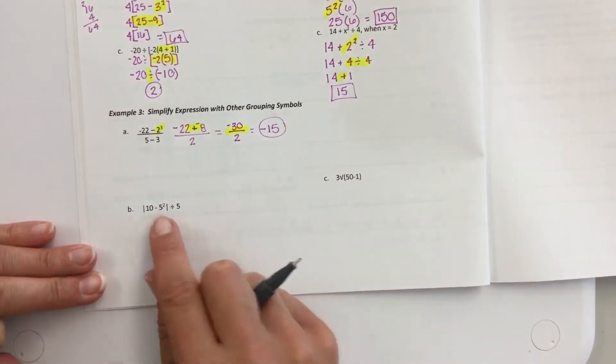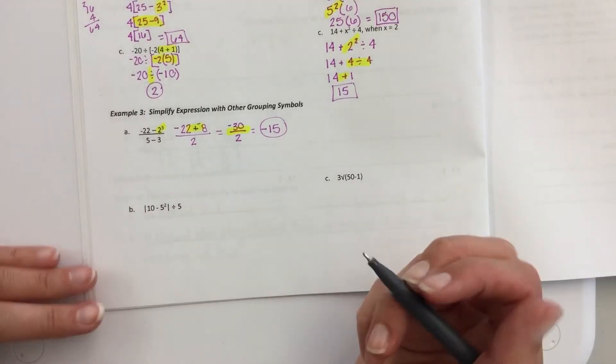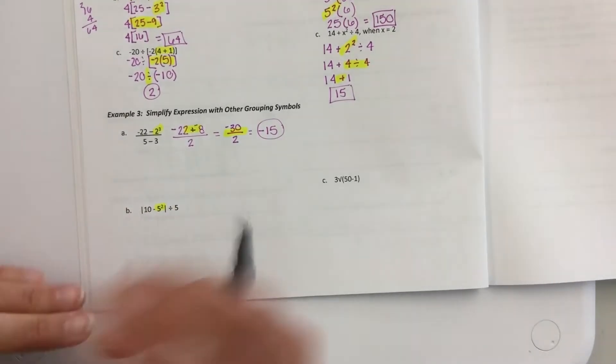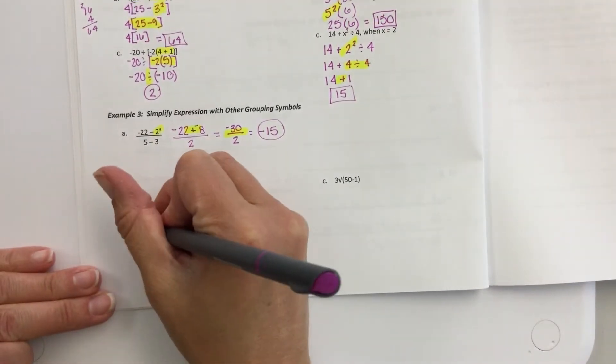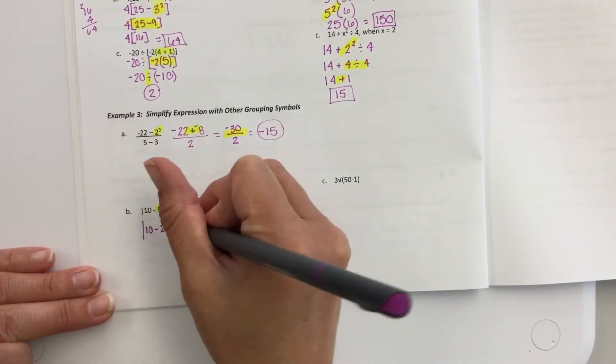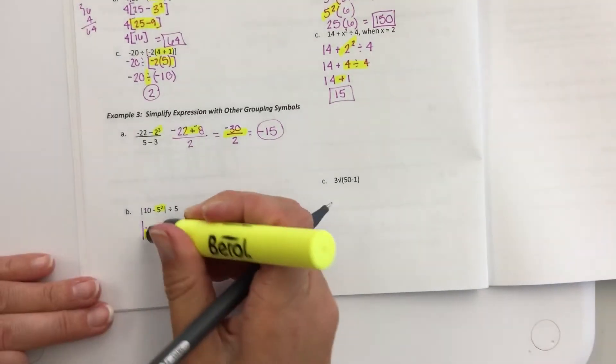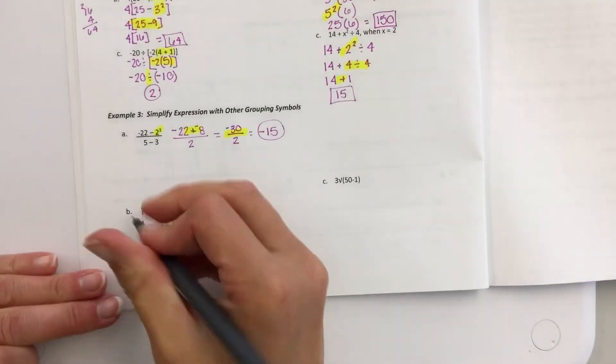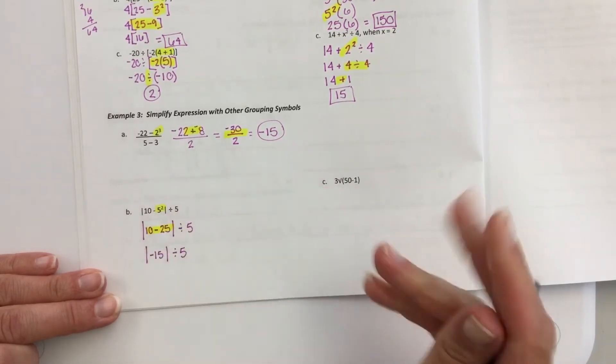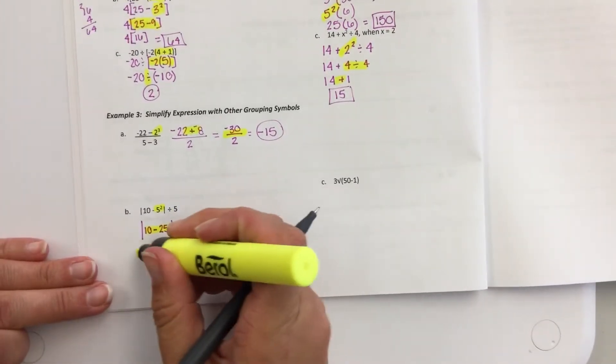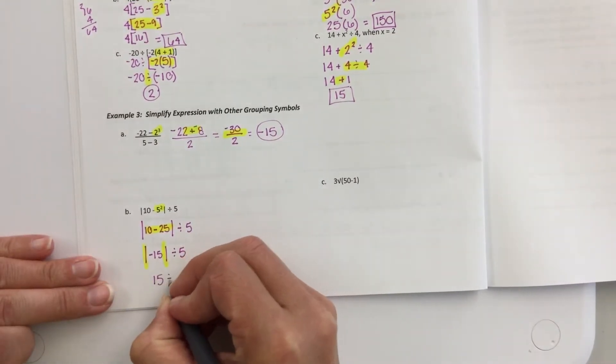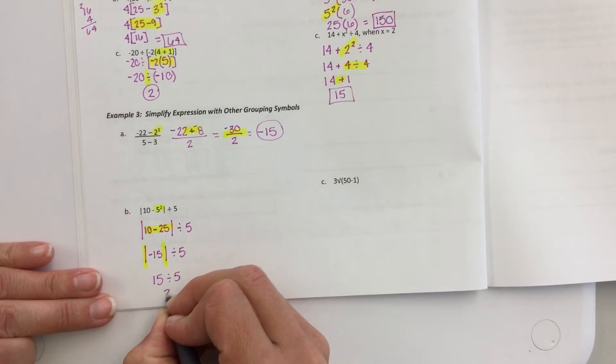Okay. You might see absolute value. Absolute value is kind of like a parentheses. So you do what's inside here first, which would be my squaring. So I still have the absolute value of 10 minus 25. Then you do what's inside here. 10 minus 25 would give you that negative 15. Then you do the absolute value. That would be positive 15. Positive 15 divided by 5 is 3.